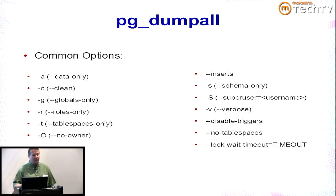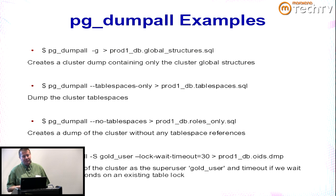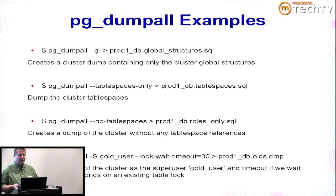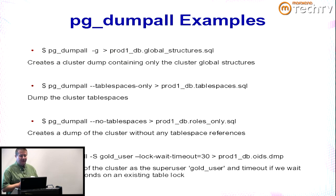A couple of pg_dumpall examples: the first does an entire cluster dump containing only global structures (-g). The second dumps only tablespaces. The third dumps the cluster without any tablespace references. The fourth dumps the entire cluster specifying superuser 'gold_user' with a lock wait timeout of 30 seconds — if it waits more than 30 seconds on a lock, it will abort.